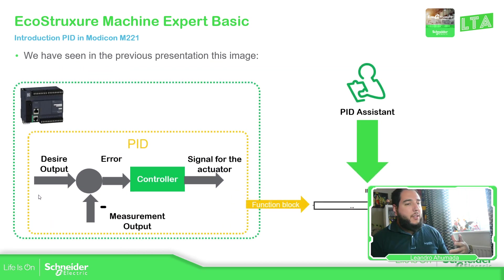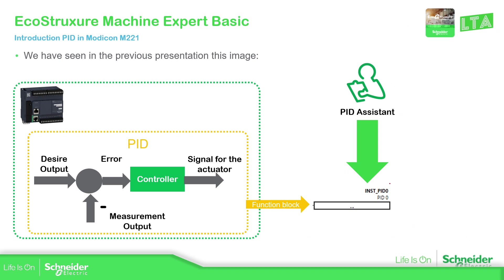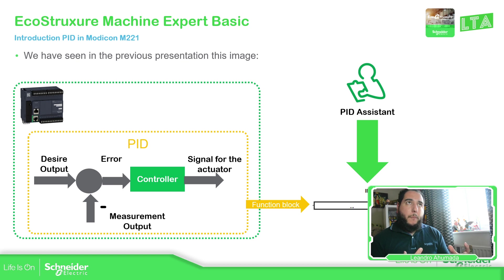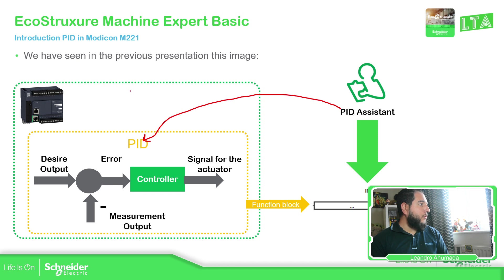Inside EcoStructure Machine Expert Basic — the software to control the M221 — we have a function block called PID. Depending on which instance, we have a different number. So this is the function block, but in order to control it, what we have is a PID system. This PID system will help us to configure the different parts for the control loop system that will affect our process.